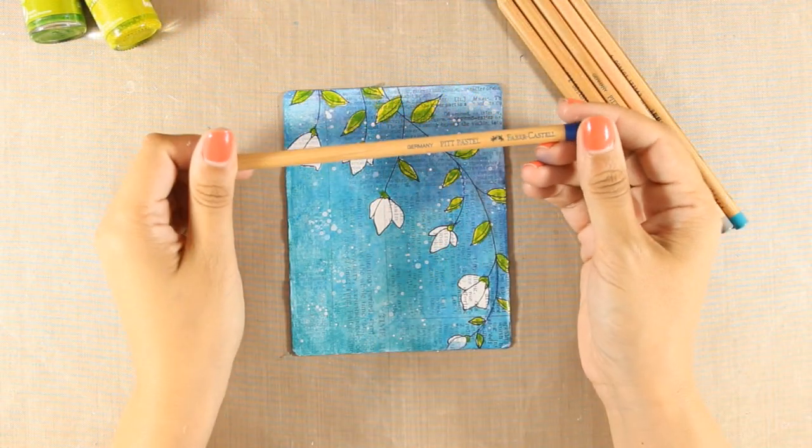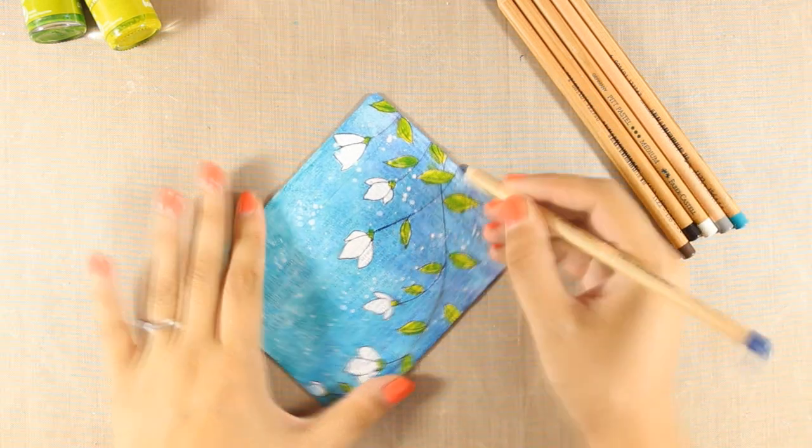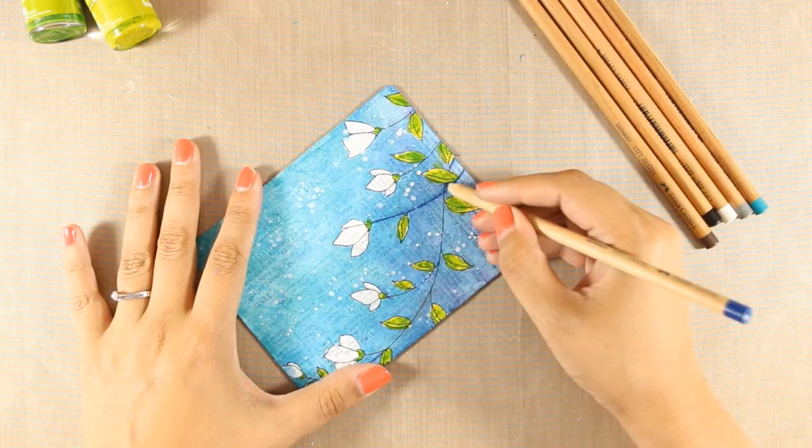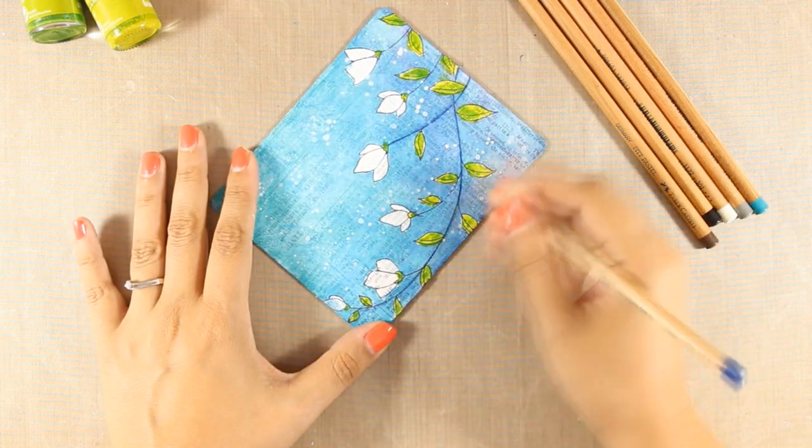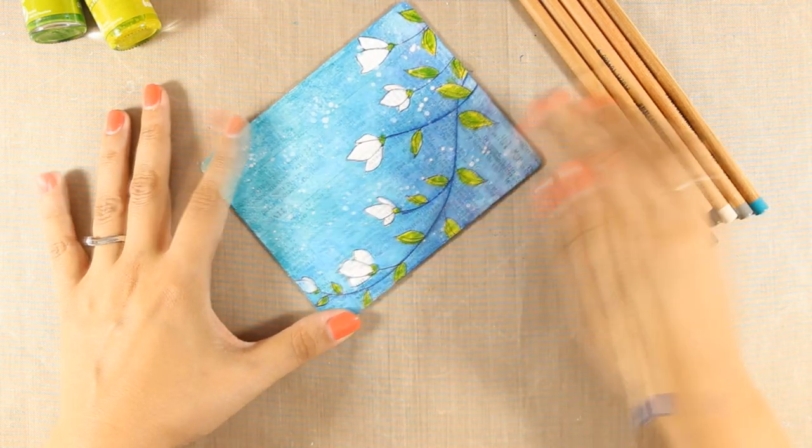Before I go ahead and color the flowers, I'm going to use these pastel pencils. These are by Faber-Castel and you can see how easily I can create shadows. I just draw the line there and blend it with my finger. I am going over the stems and I am going to add some shadows around some of the leaves and the flowers.